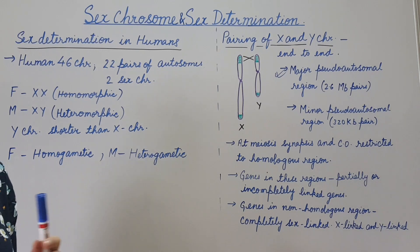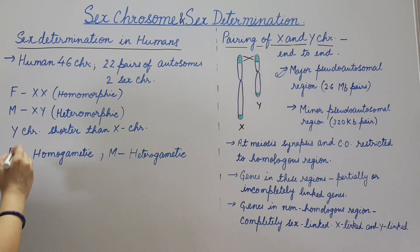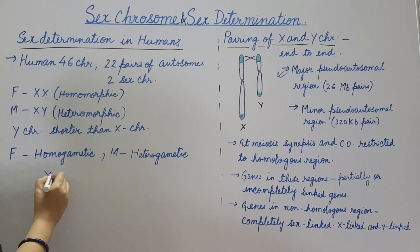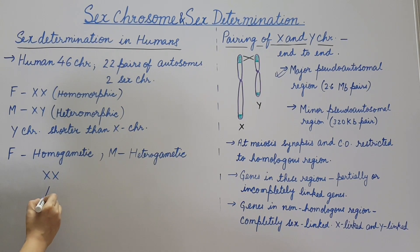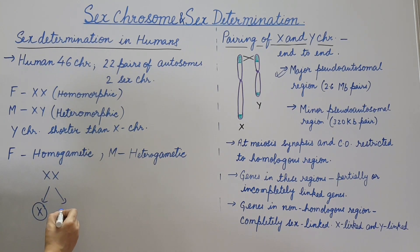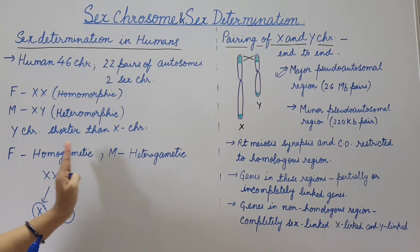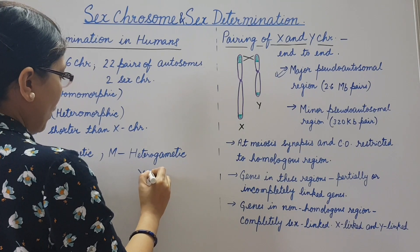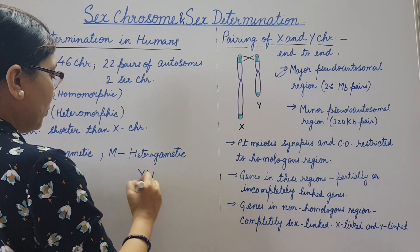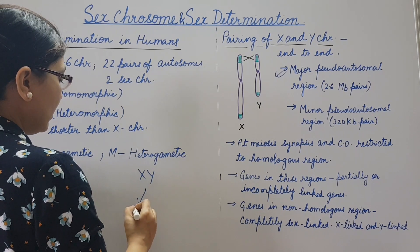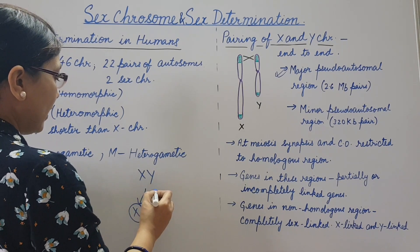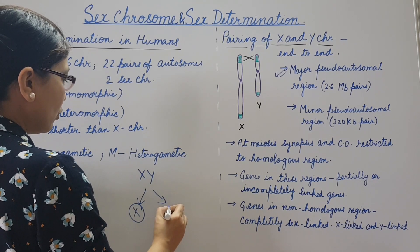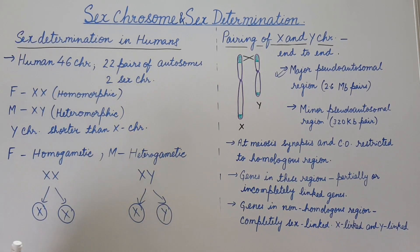The Y chromosome is shorter than the X chromosome. Females are homogametic: during meiosis, pairing of X chromosomes takes place, then they segregate, and all eggs receive an X chromosome. Males are heterogametic: during meiosis, one X and one Y chromosome pair, then segregate. Half of the sperm receive an X chromosome and half receive a Y chromosome, so males are heterogametic.